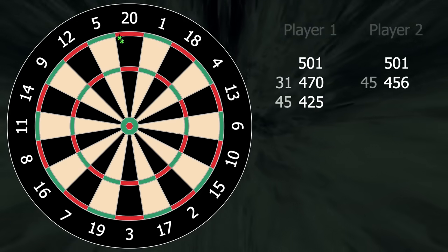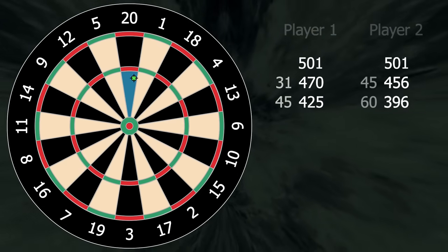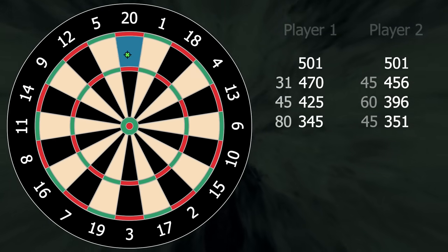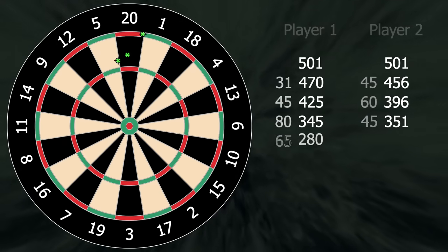So if you've got 10 left and you hit 15, you'll go bust and you need to try again next time. If you hit single 10, even though you're down to 0, you still go bust because you haven't finished on a double. The only way to finish this leg is to hit double 5 or another route like single 2, double 4.